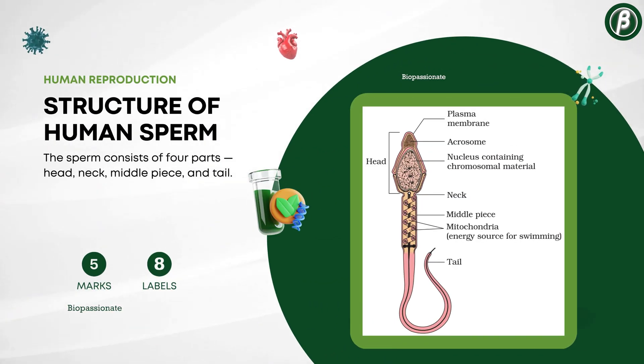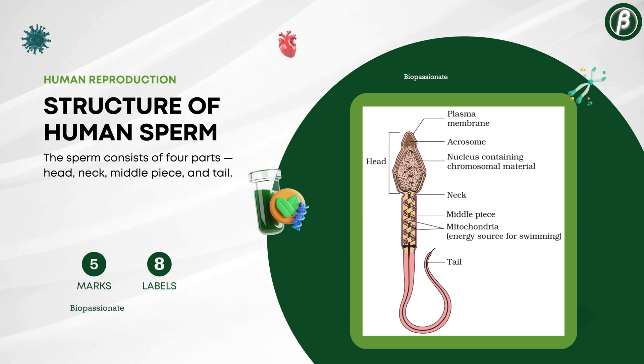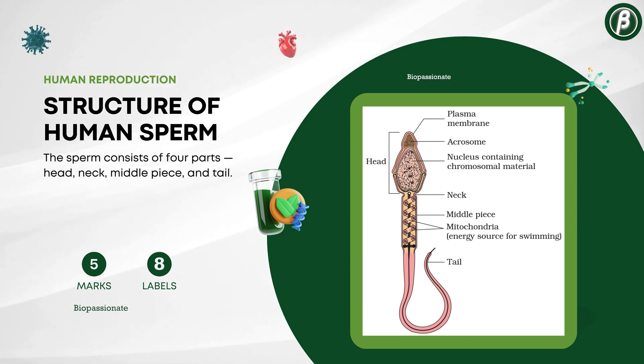Number 6: The structure of human sperm, for 5 marks with a minimum of 8 labels.